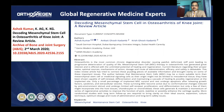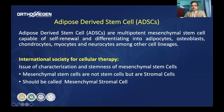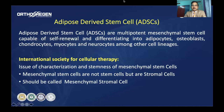Caplan revisited his concept and agreed with the International Society for Cellular Therapy that these are not stem cells, but he did not agree that they are stromal cells. He proposed another terminology: medicinal signaling cells, arguing that since these cells act through different signals releasing growth factors, they should be called medicinal signaling cells. So we have Caplan's medicinal signaling cells, the International Society's stromal cells, and the International Federation's adipose-derived stem cells.